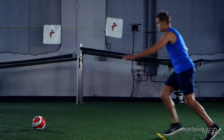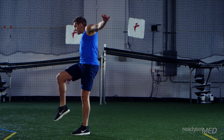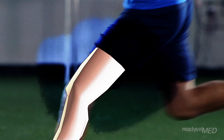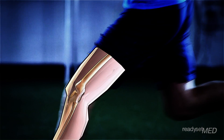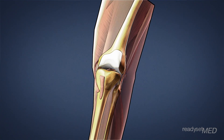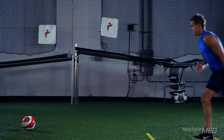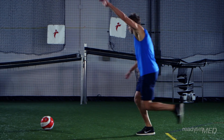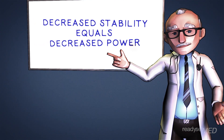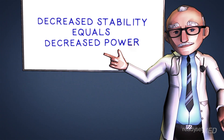When kicking and throwing, having stability in your plant leg is essential for generating power. First, he plants his left leg firmly. When the knee is fully extended, there are several structures working together to provide stability. When each of these structures are in good shape, they work in unison to ensure that his body weight and momentum transfer efficiently to the ball. If your ACL is injured, the instability in your knee will decrease your ability to generate power.